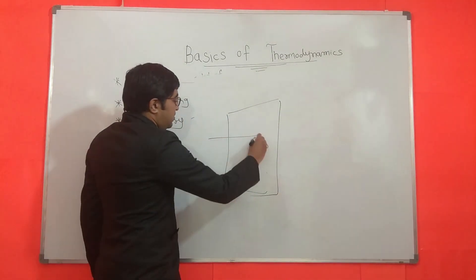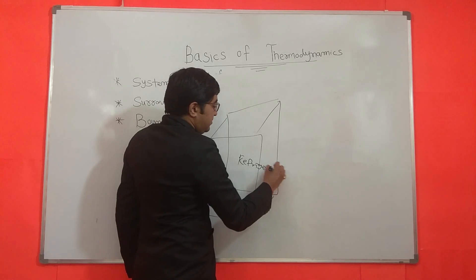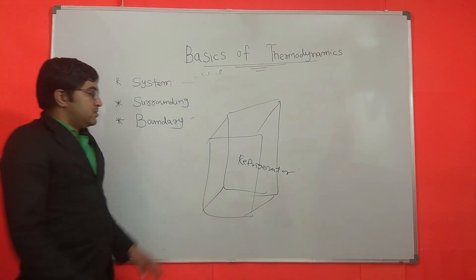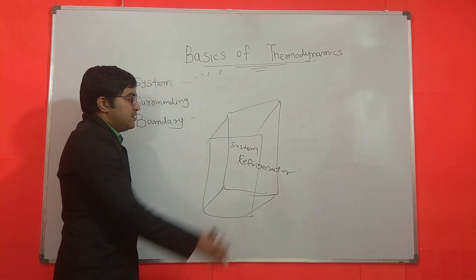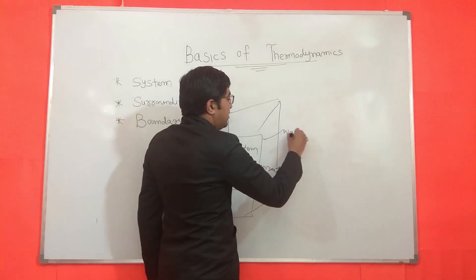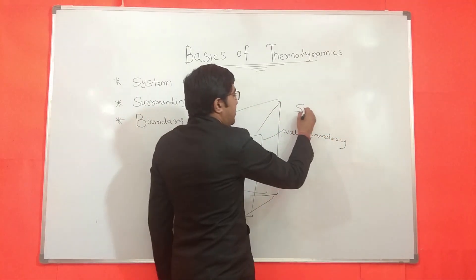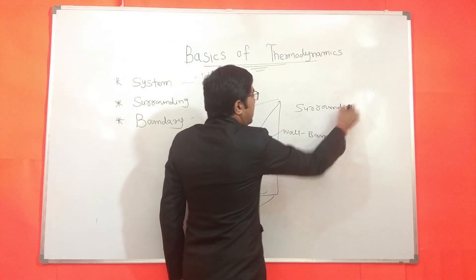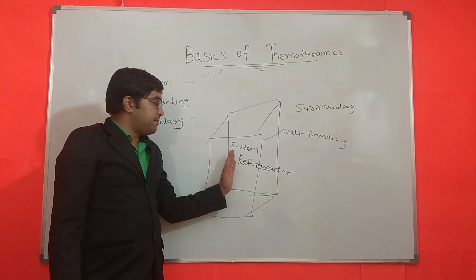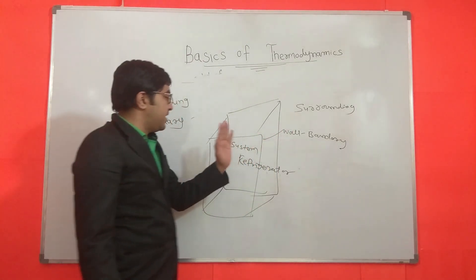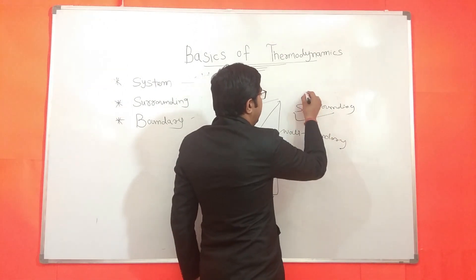Consider the example of a domestic refrigerator. The internal part of the refrigerator is my system, the wall of the refrigerator is my boundary, and outside the boundary is called the surrounding. So in case of a refrigerator, the wall is my boundary and the outside air is my surrounding.